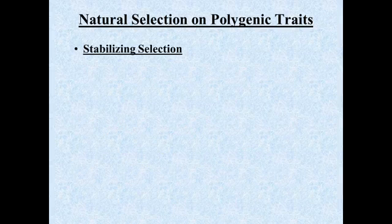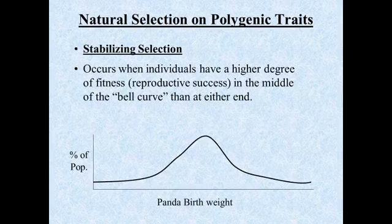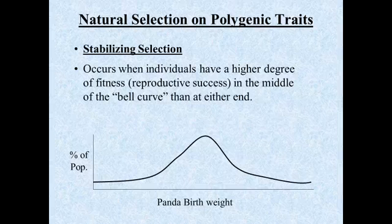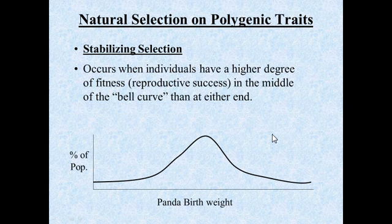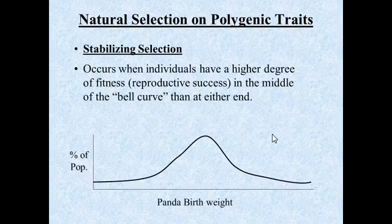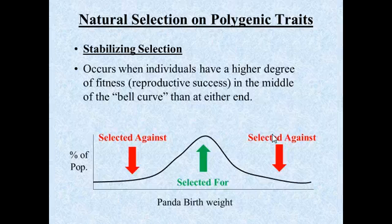The next type is stabilizing selection. Stabilizing selection occurs when individuals with a higher degree of fitness or reproductive success are found in the middle of the bell curve rather than at either end. One example is the birth weight of pandas. If they're born too small, they have a very low chance of surviving. If they're born too large, they can cause internal damage to the mother during birth — and if the mother dies, the baby typically won't survive either.